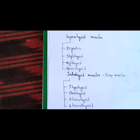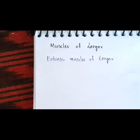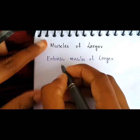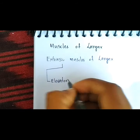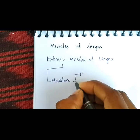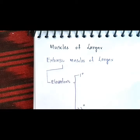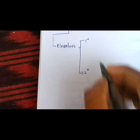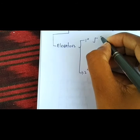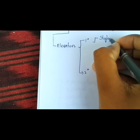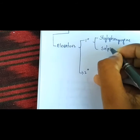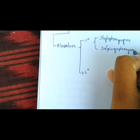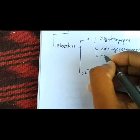Now having done this, let's move on to extrinsic muscles of larynx. In the extrinsic muscles we have elevators and depressors of larynx. The primary elevators of larynx are stylopharyngeus, salpingopharyngeus and palatopharyngeus.